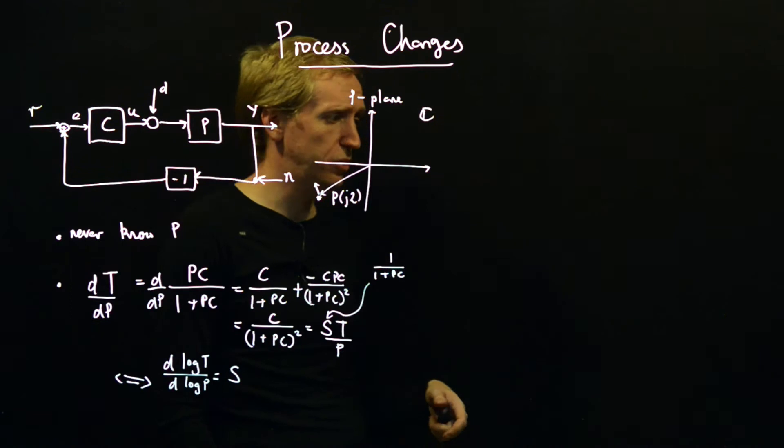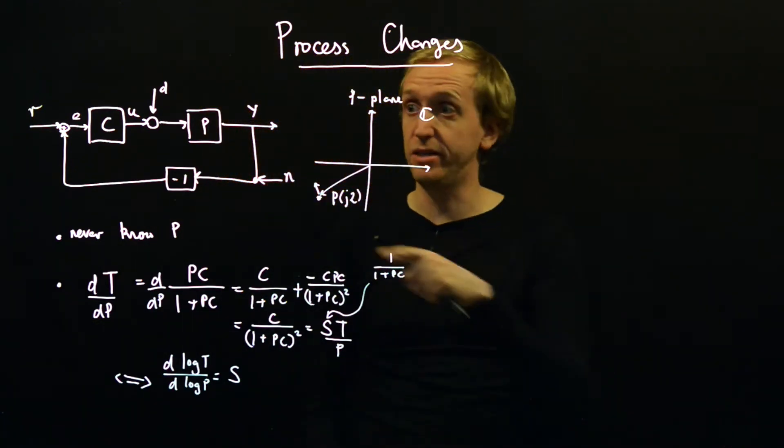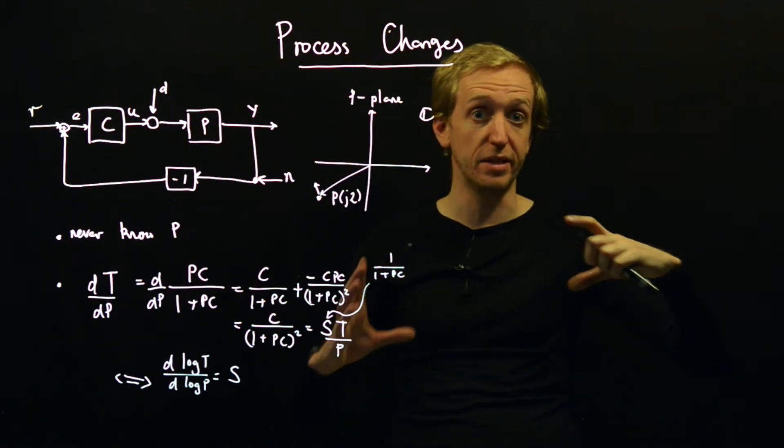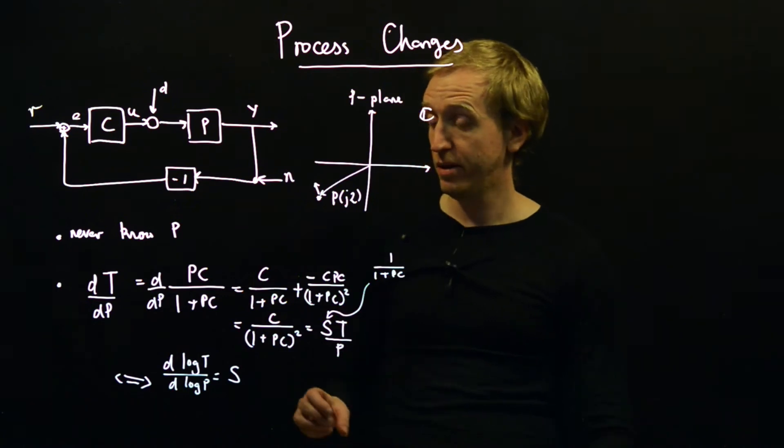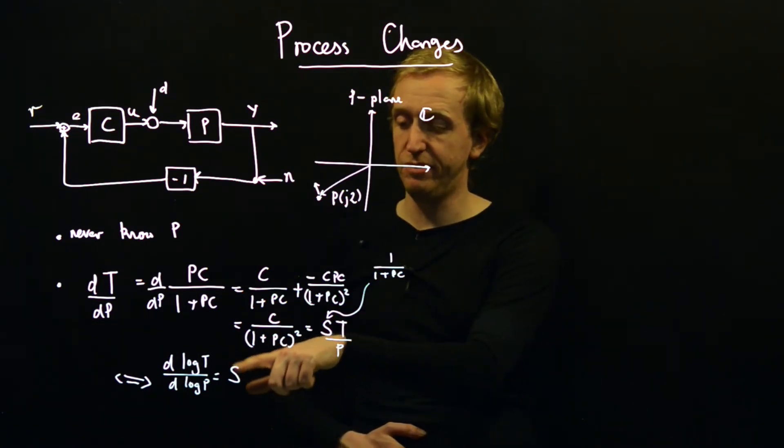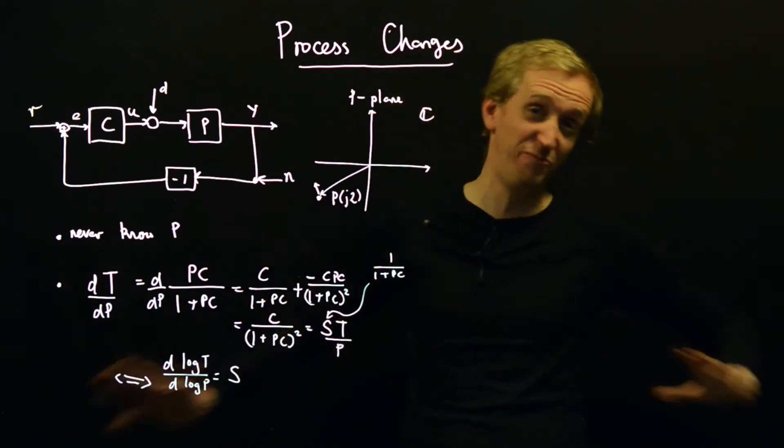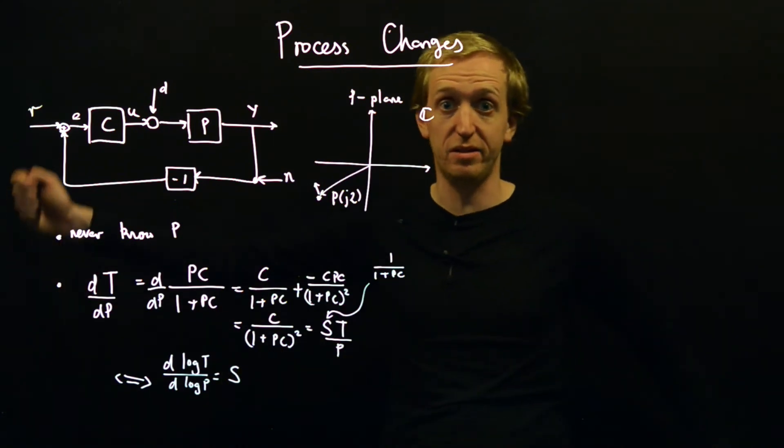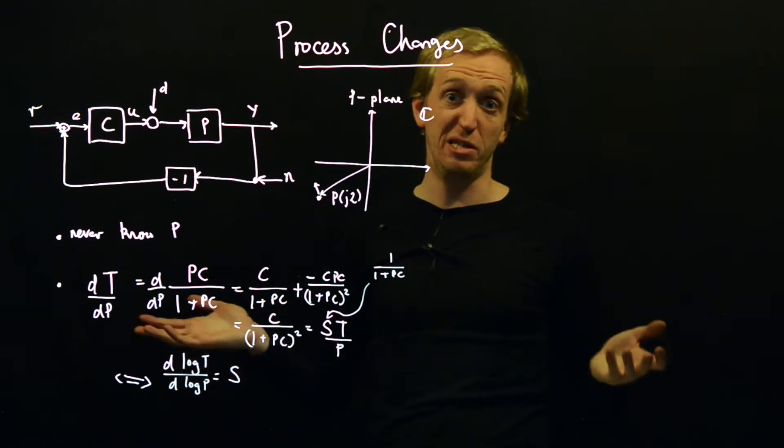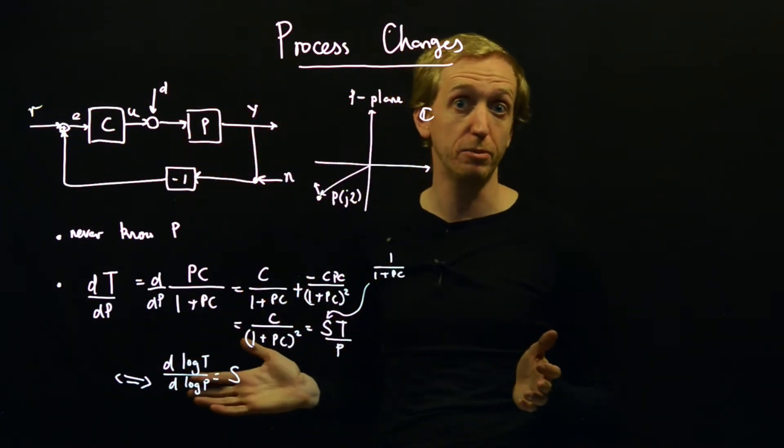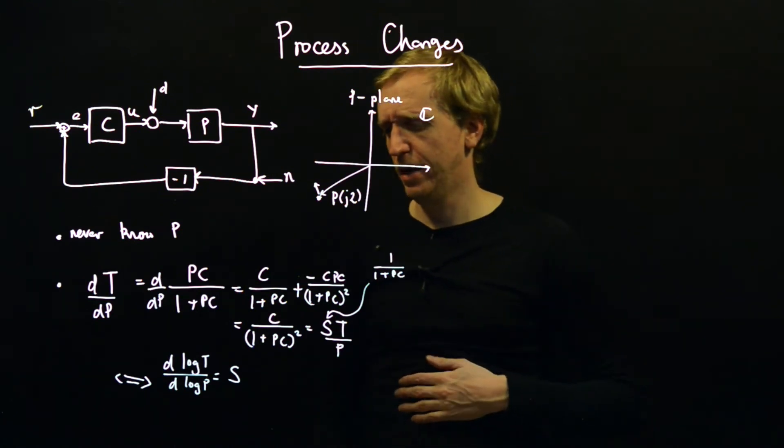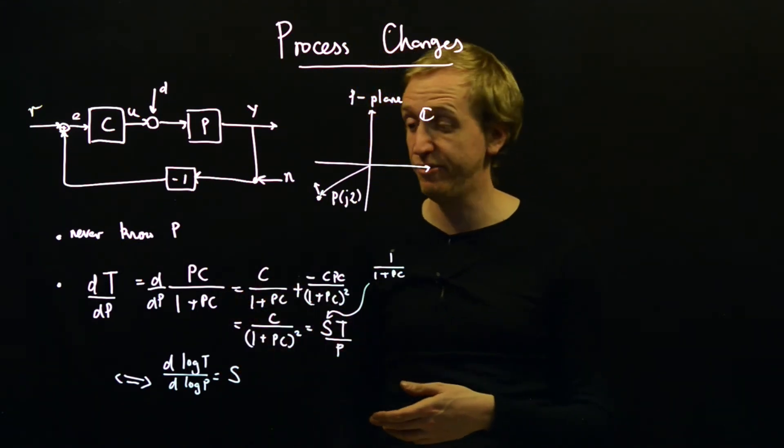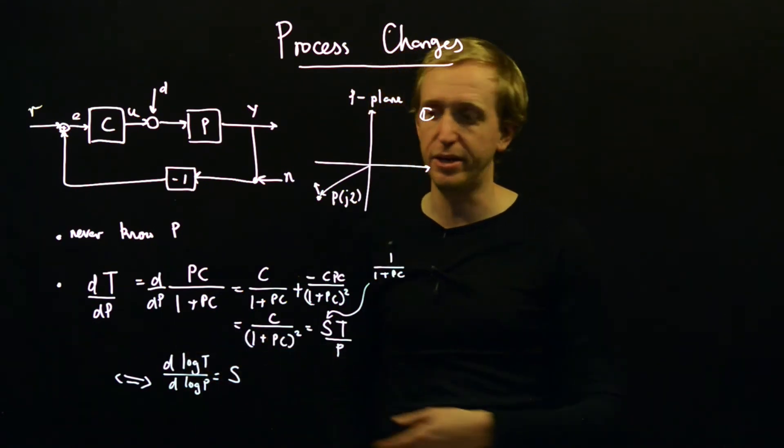So if you like, this is our first result developing our understanding for making ourselves robust to changes in the process. Wherever we can make the sensitivity function small, we should get fairly predictable behavior, even when there's fairly significant deviations in the process. And if you think back to the picture that we drew when we were looking at the effect of these disturbances D, we had our picture with our Nyquist diagrams and those balls of constant sensitivity function, well actually this completely fits.